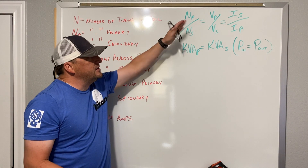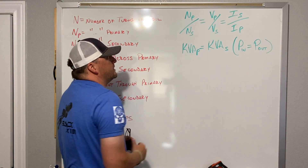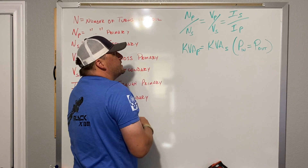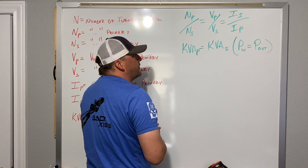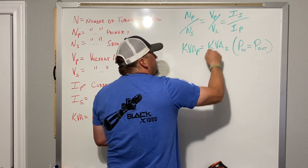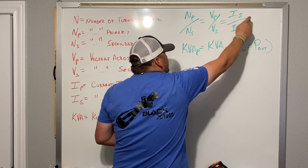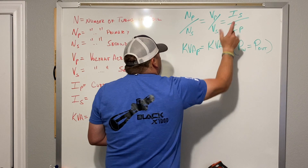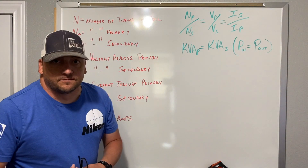Over here, some call this the 100-year calculation — I'm not exactly sure why. But this is what we're going to be looking at for lab today: NP over NS — the number of turns in the primary divided by the number of turns in the secondary — equals voltage on the primary over voltage on the secondary, equals current on the secondary divided by current on the primary. We have P over S, P over S, S over P, so that last one is flipped. When you perform these with the data we gather, these should all equal one another, or at least really close.